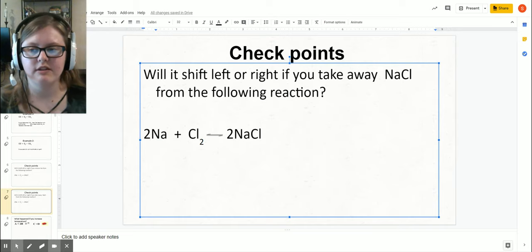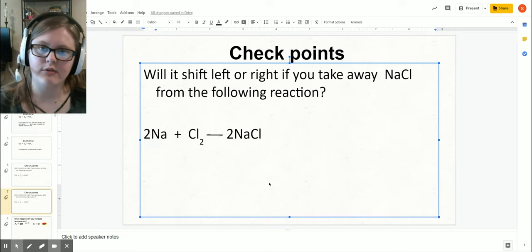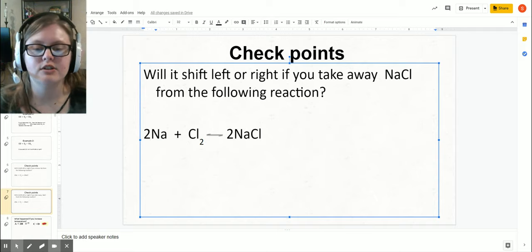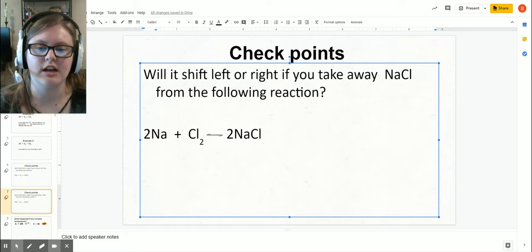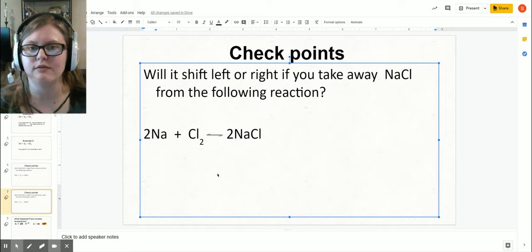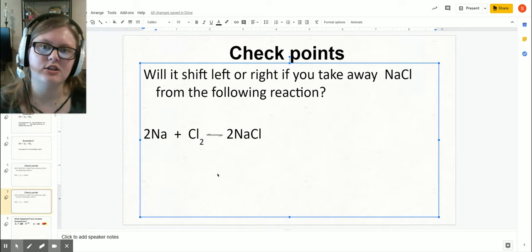Another way to think of this besides left and right is forward and reverse reaction. If you're going from left to right, that's considered the forward reaction because that's the way we read—left to right. If you're shifting to the left, that would be the reverse reaction, going from right to left. You may be seeing forward and reverse reaction; you may be seeing shift left and right.